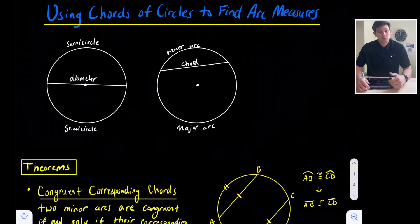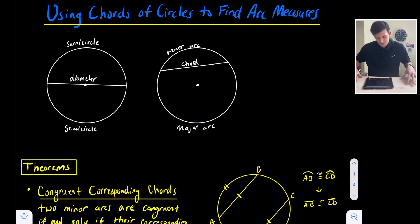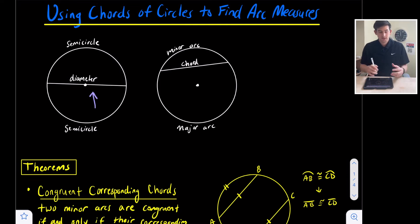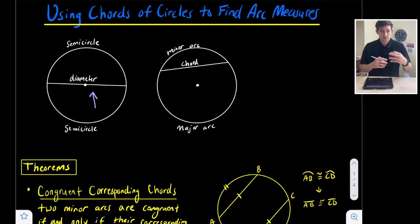Hello, everyone. In this video, we're going to talk about how we can use chords to find arc measures in circles. Just a quick reminder: we have two circles at the top with a couple different measures and diagrams. The one on the left has a chord that is a diameter — it has endpoints on the circle but goes through the center. A diameter is a chord, but it's more specific because it passes through the center, splitting our circle into semi-circles.